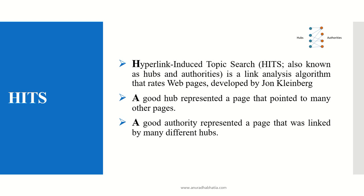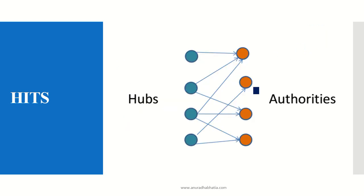This algorithm finds out what is a good hub and what is a good authority. A good hub is represented as a page that points to many other pages, and a good authority is represented as a page that is linked to by many other hubs. These are the pages which are linked to many pages, and authority which is linked to many other hubs.